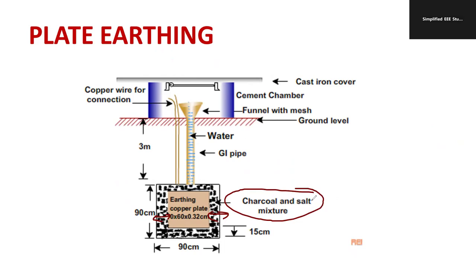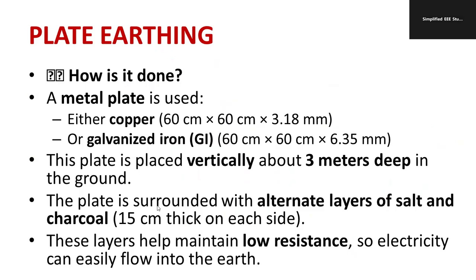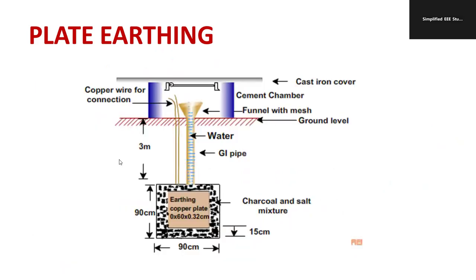Why are you going to pour the salt and charcoal? That means I want to minimize the earth resistance as minimum as possible. Therefore I will be adding charcoal as well as salt, along with water. So that earth resistance will be reduced. More fault current will be diverted towards the metal plate. These layers maintain low resistance so electricity can easily flow to the earth. That's why we are performing plate earthing.